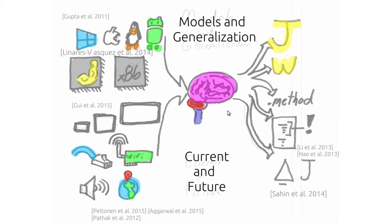People are concerned about generalizing these models. Jang et al. suggested linear models to correct between similar devices. We have measurement, modeling, and generalization efforts. Researchers care about the effect of ads (Gui et al.), OLED screens (Gui and Li), and refactoring (Sayan et al.) — all dealt with using energy models. But to build these energy models, we still need measurement.